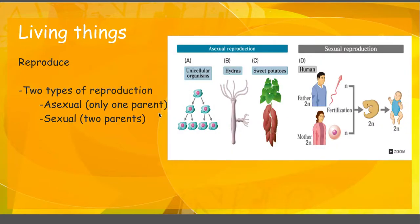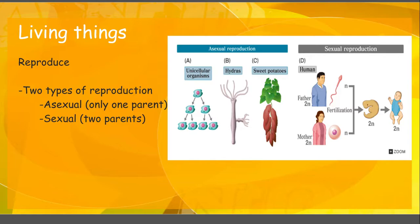Our second characteristic is that all living things are able to reproduce — they make more of themselves. There are two different ways of reproducing. You can reproduce asexually, where that A means without, so you only have one parent. Bacteria do this — they just split in half and everybody looks the same. Or you can reproduce sexually, where you have two parents or two sources of DNA, and your offspring look like a combination of those two parents. When we talk about genetics, we'll discuss why sexual reproduction is useful in the world of biology. So all living things are made of cells, and all living things reproduce.